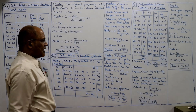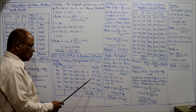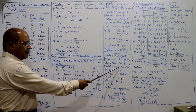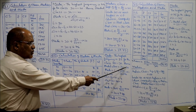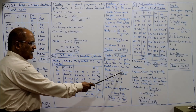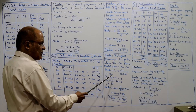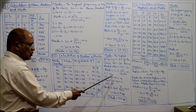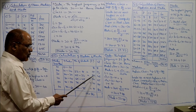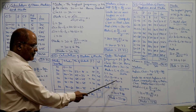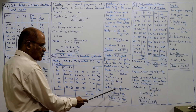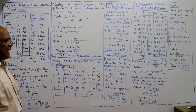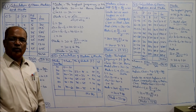For mode, the highest frequency is 22, against the class 20–30. Modal class = 20–30. Mode = L + [Δ1/(Δ1+Δ2)] × I. L=20, Δ1=22−15=7, Δ2=22−20=2, I=10. Mode = 20 + [7/(7+2)] × 10 = 20 + 7.78 = 27.78. That is the mode for problem 22.